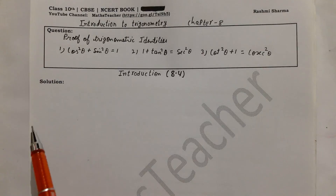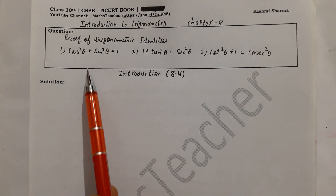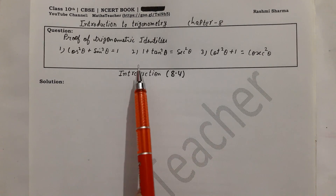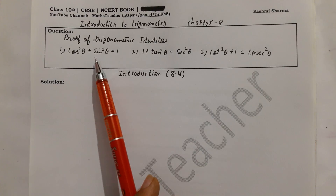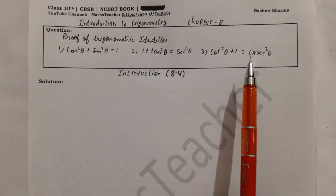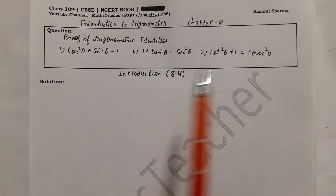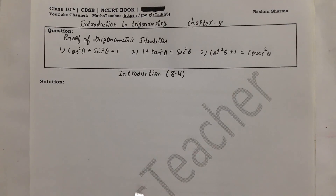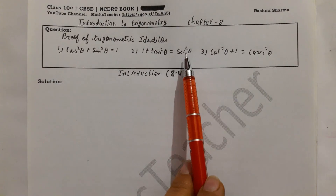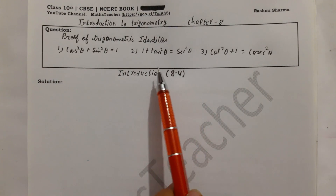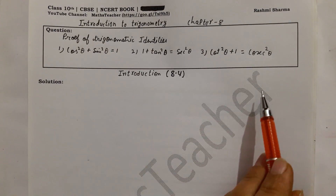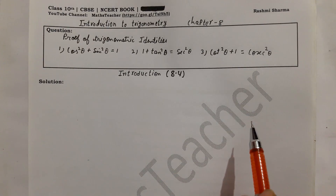If you watch this video properly, any confusion between sin and cos, tan and sec, or cot and cosec will be cleared. Never forget these theorems. To derive them, you will need to learn the 6 trigonometric ratios.